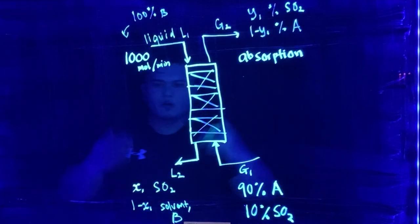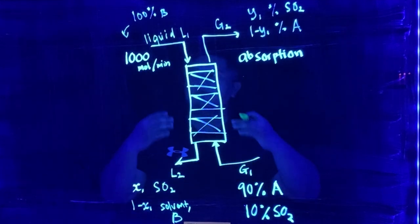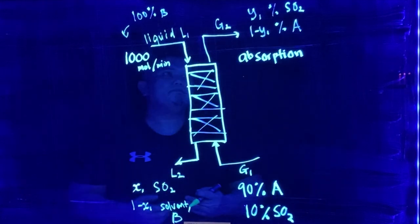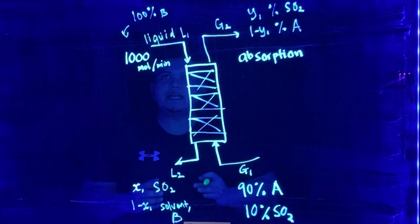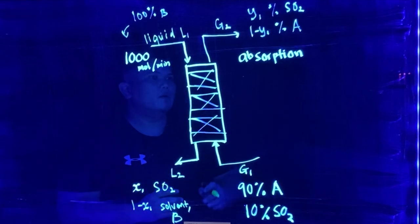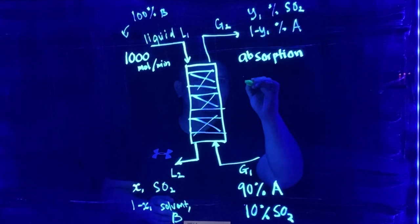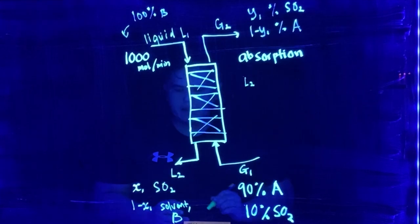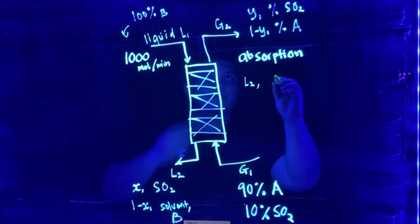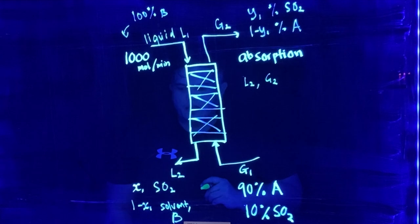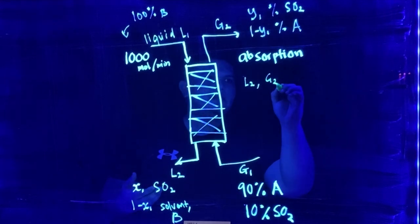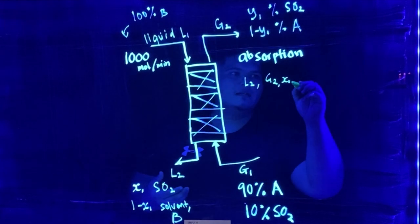So how do we solve this absorption process problem? First of all, we need to identify how many unknowns that we have right now. So here, we do not know what is L2. We are not sure what is G2, and then we are not sure what is X1.